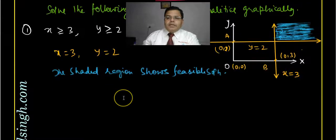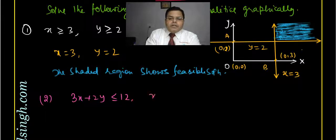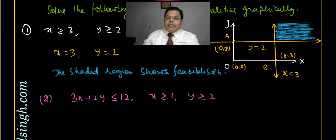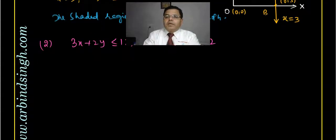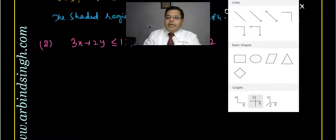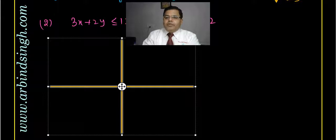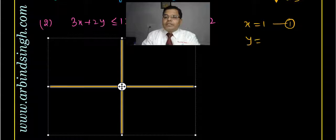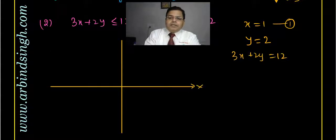Now let us consider question number 2. The question is: 3x + 2y is less than 12, x is greater than 1, and y is greater than 2. There are three inequalities and we have to plot a graph for them. First, make a table. The corresponding equations are x = 1, y = 2, and 3x + 2y = 12.